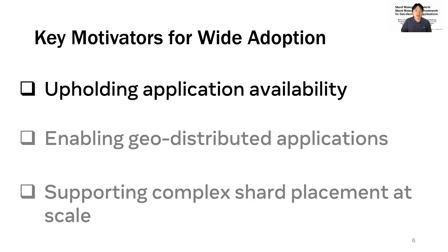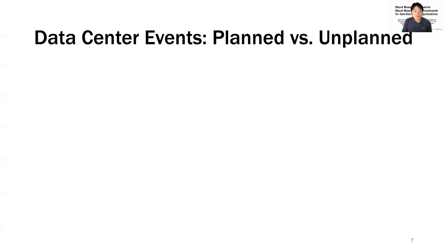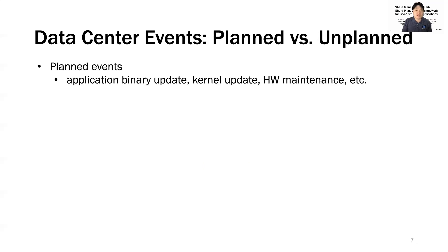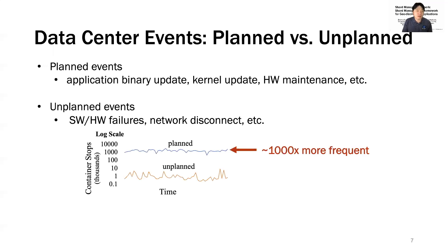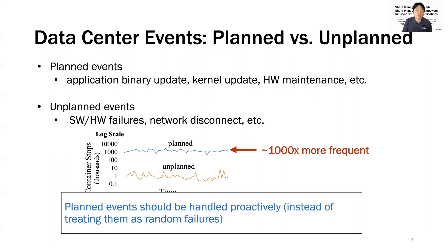Let's first look at how Shard Manager offers application availability. In data centers, there are many events that affect application availability. They can be either planned events such as application update, kernel update, and hardware maintenance, or unplanned events such as software and hardware failures and network disconnect. This chart shows that compared to unplanned events, planned operations cause about 1000 times more frequent container stops, implying that if we treat planned operations the same as unplanned failures, it may significantly amplify application unavailability.